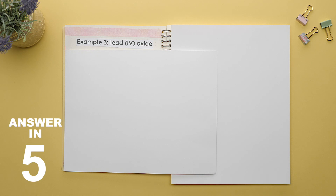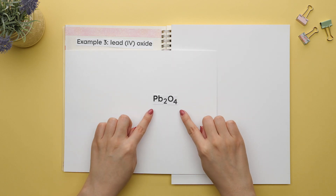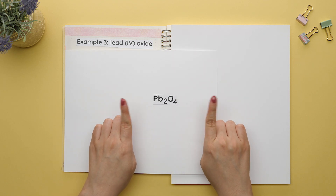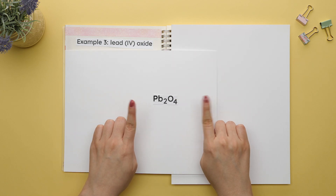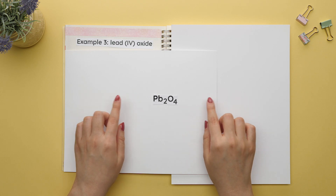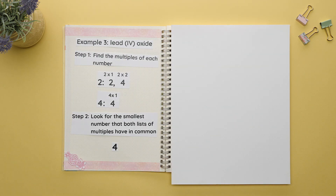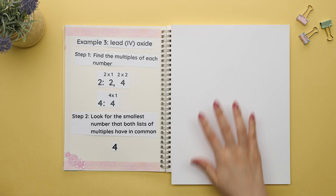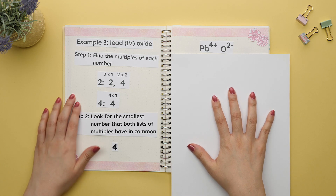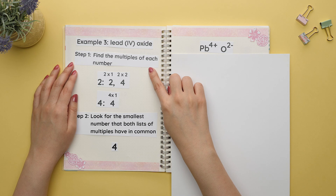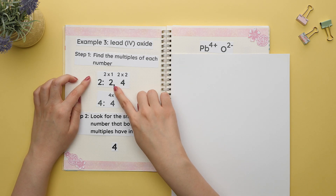How about you try this one on your own using the same steps we went over. If you said PbO₄, you just made a common mistake — and this is exactly why finding the least common multiple will help you avoid making this mistake. So let's find the least common multiple using the charges as our numbers. We'll start with finding the multiples of each number: 2, 4.